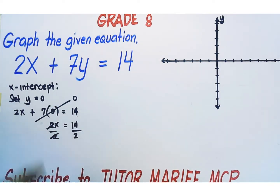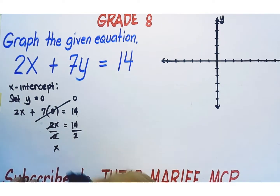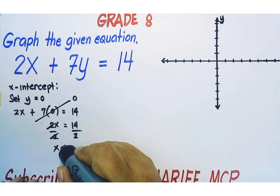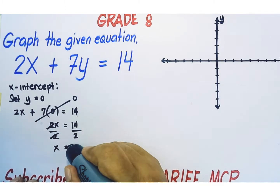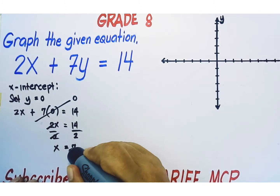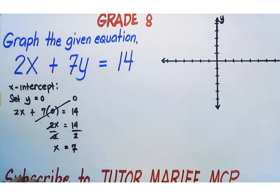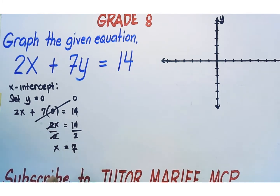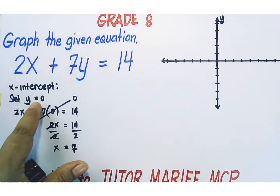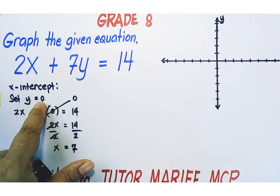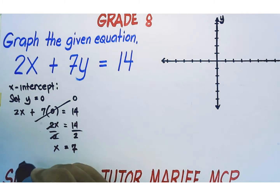Cancel out 2. x is equal to 14 divided by 2, which equals 7. This is the x-coordinate of the x-intercept. The y-coordinate of the x-intercept is zero.